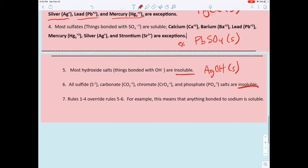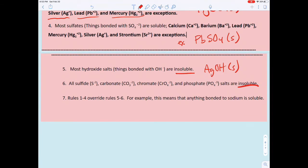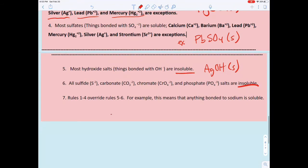This one's really important: the first four rules override rules five and six. That means all the rules that say something is soluble override any other rules. Anything bonded with sodium is soluble, and any nitrate will always be soluble.